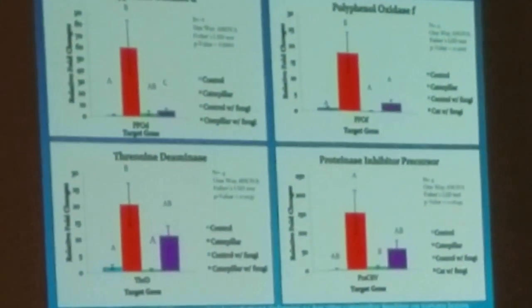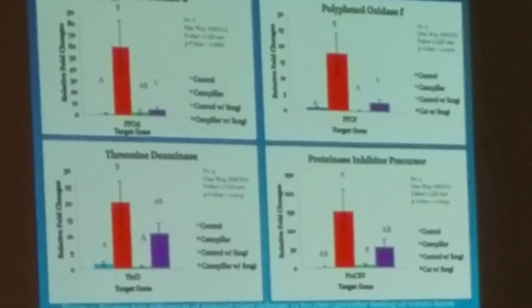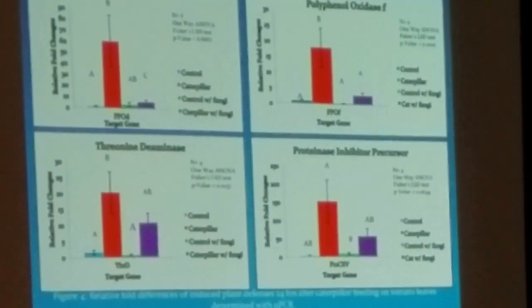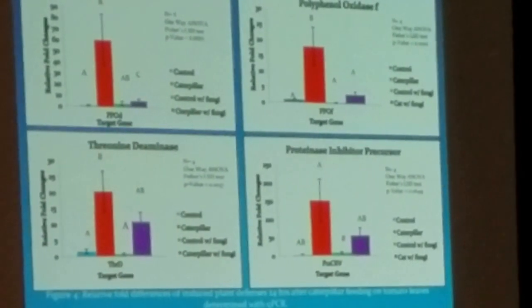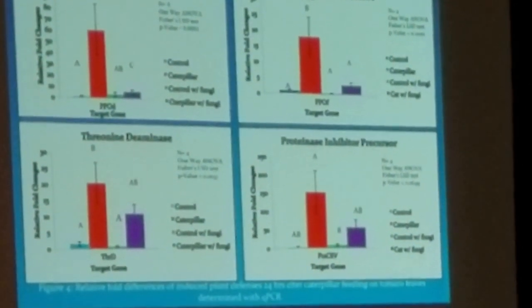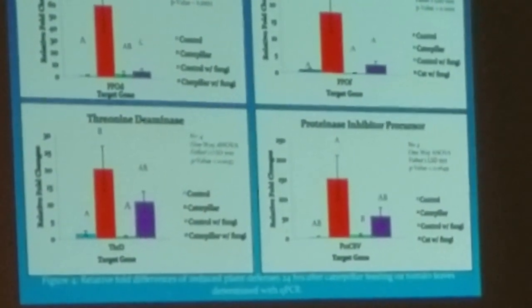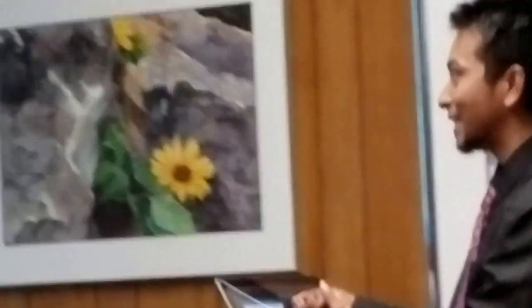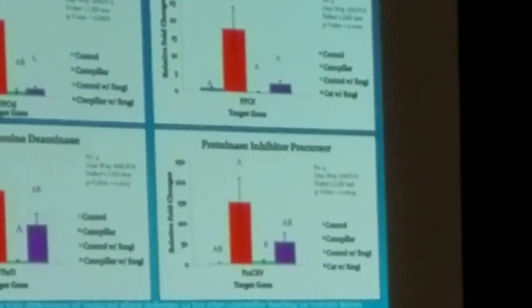Then, the proteinase inhibitor precursor — it triggers the proteinase inhibitor, which stops or blocks the protease enzyme in the gut so the caterpillar cannot digest protein. Again, an anti-nutritive function is intact. And again, we can see there is a difference between caterpillar treatment and the presence of fungi.